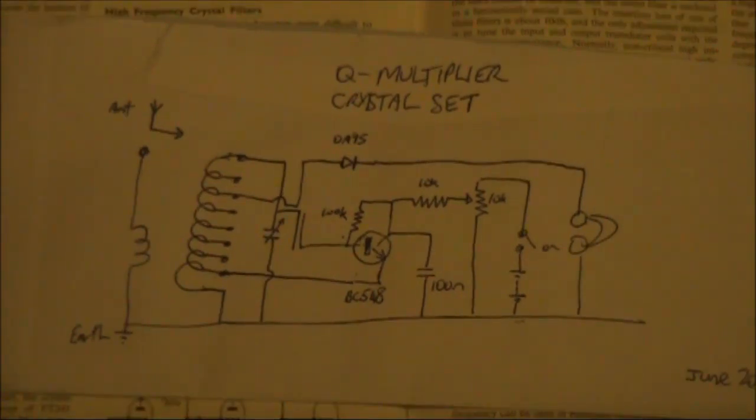As you can see from the diagram, the emitter of the Q-multiplier is tapped low down on the tuning coil, only about 3 or 4 turns above the earth. The base is loosely coupled to the hot end of the tuning coil, which is also where the variable capacitor is connected.